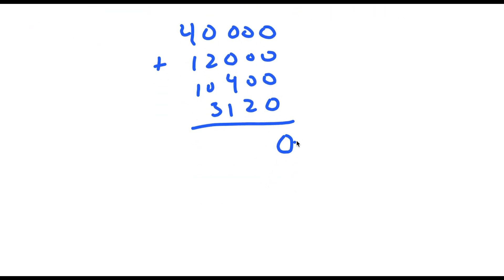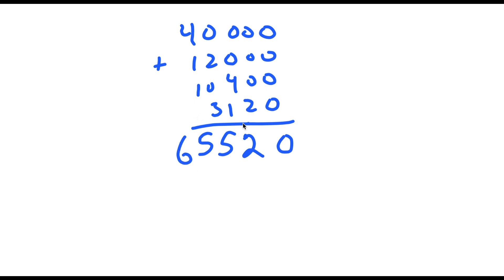So now I'm going to add up all the zeros. And now 0 plus 0 plus 0 plus 2 is 2. 0 plus 0 plus 4 plus 1 is 5. 2 plus 3 is 5. And 4 plus 1 plus 1 is 6. So I get 65,520 as my solution for this expression.